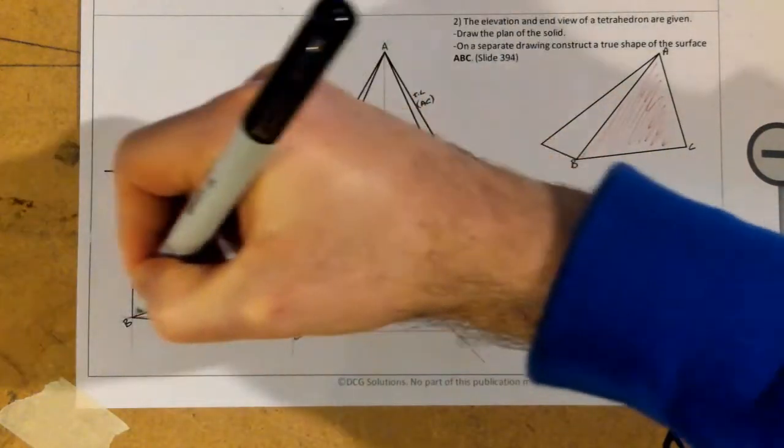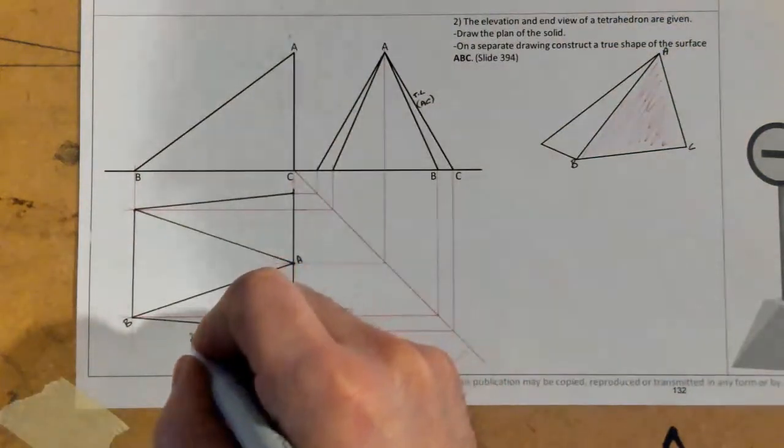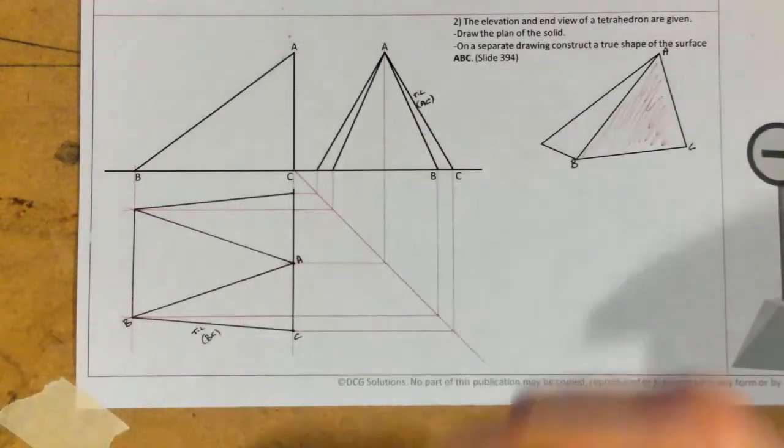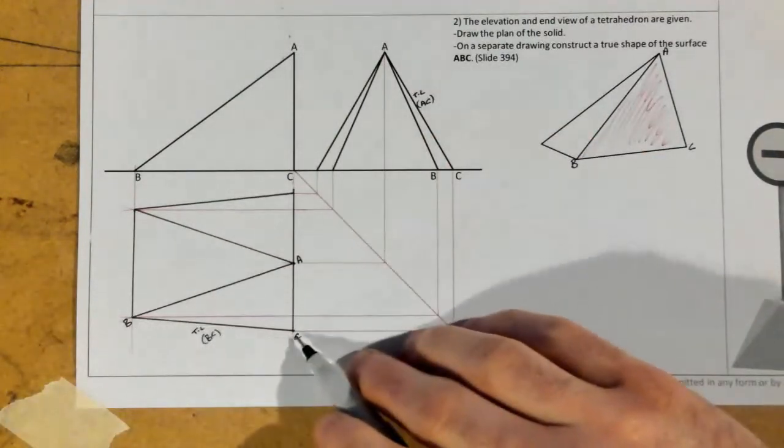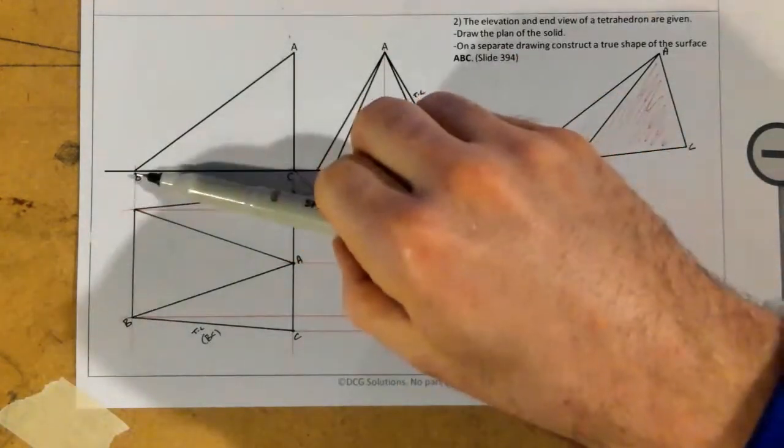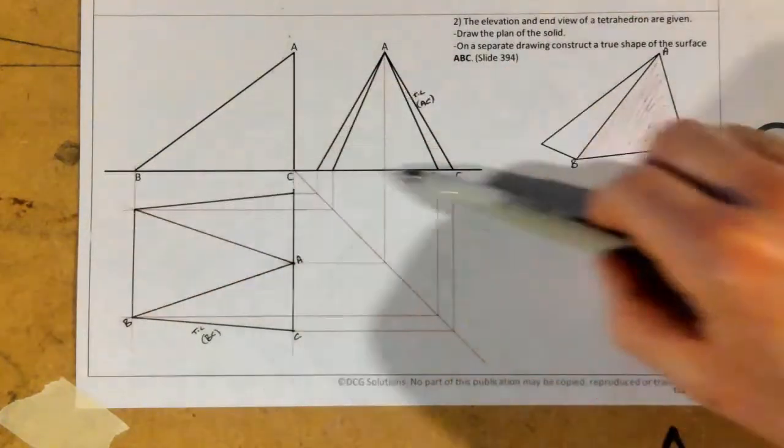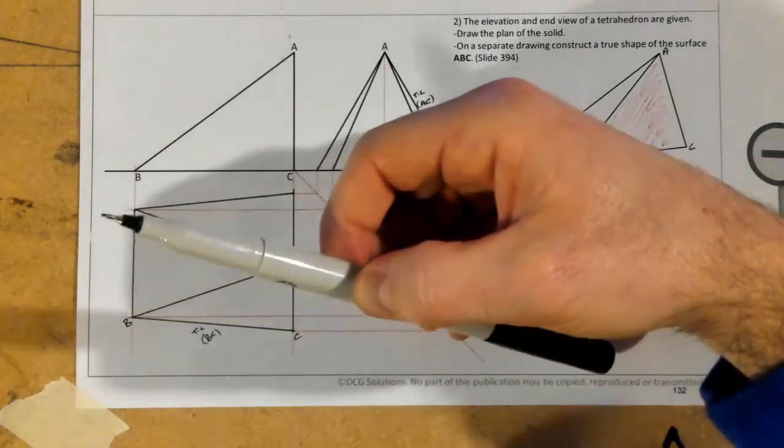And this one is actually the true length. So that is the true length of my line B, C. So there we go. I've got two of them so far. The reason that one is the true length of my line B, C is because B, C here in elevation is parallel with the X, Y line. I know it's sitting on it, but if it's sitting on it, it's also parallel.